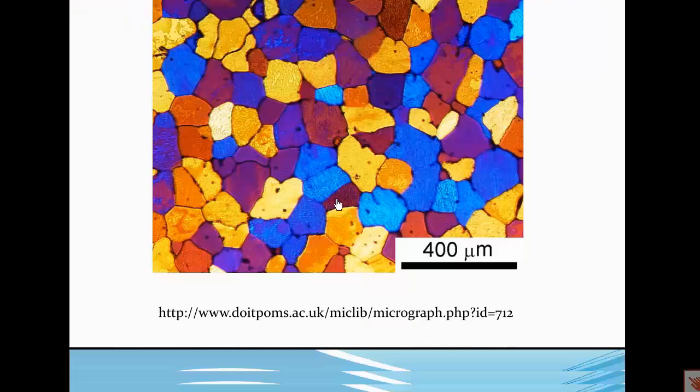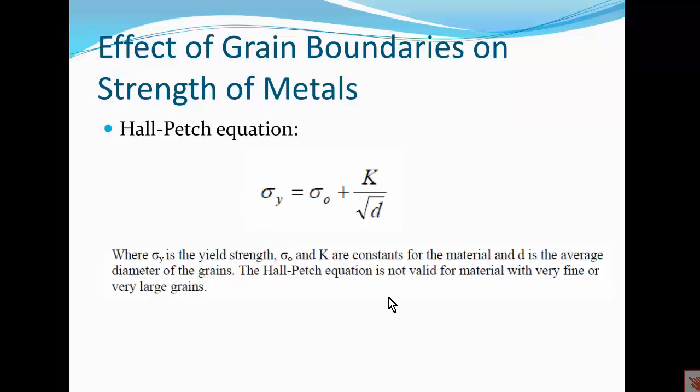Grain boundaries are important in increasing the strength of the material by disrupting the movement of dislocations across them. The extent of the strengthening can be characterized by the Hall-Petch equation. Sigma Y is the yield strength of the material, which can be expressed as sigma O, which is a constant, plus K, which is a constant, divided by the square root of D, where D is the average diameter of the grains in the material.